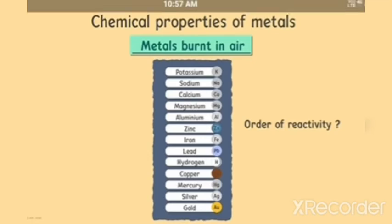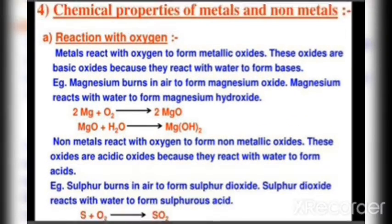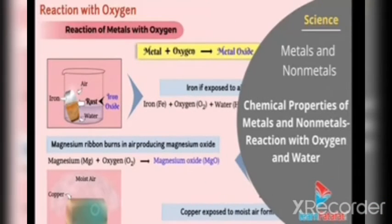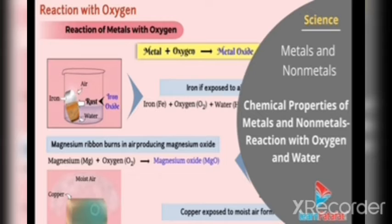This is how the video gives information on how metals and nonmetals react with oxygen. Looking at the picture of reactions with oxygen: when iron is kept in water it starts to rust, forming iron oxide — Fe + O₂ + H₂O → iron oxide. When magnesium burns in air it produces magnesium oxide: Mg + O₂ → MgO. Overall, when a metal reacts with oxygen it gives a metal oxide, and metal oxides are usually basic in nature.